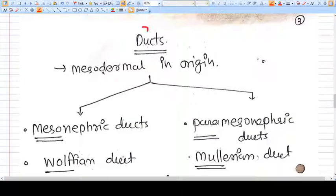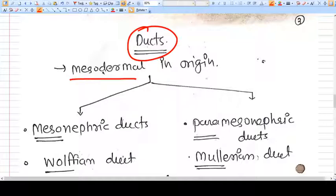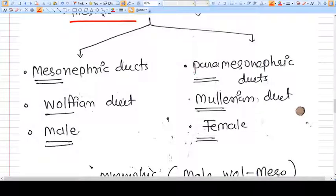Now let's talk about duct, which will be mesodermal in origin. If we talk about male and female, we have two basic ducts. There is a lot of confusion in students and newcomers about which are these ducts. Remember, both of these ducts are present in both male and female, but one duct becomes prominent in the specific gender. Both ducts are present in both sexes.